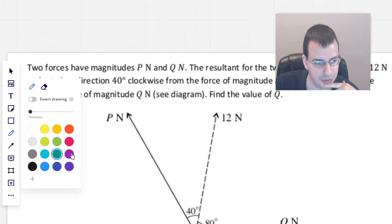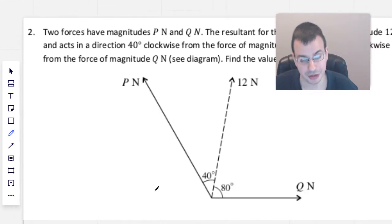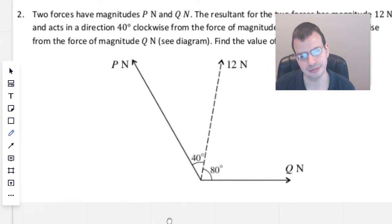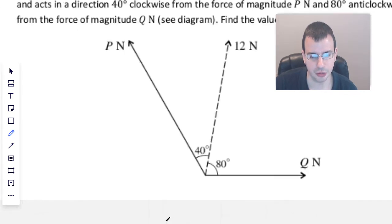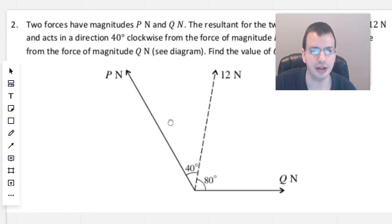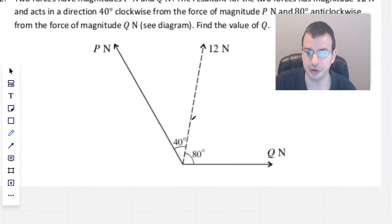Okay, so we're not given a lot of information here. Hopefully we have enough to solve it. Let's start by, so we know that the resultant of the two forces, we add this vector and we add that vector, and we'll get this vector.